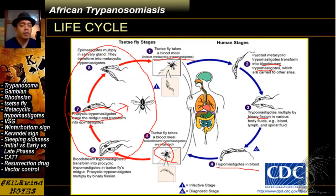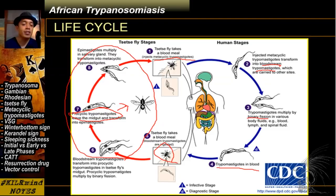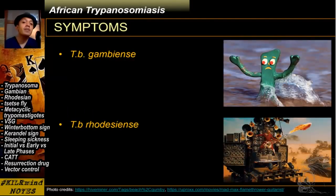While there is well-documented asexual reproduction amongst protists including your trypanosomes, there has been evidence of genetic exchange going on. According to studies, this usually happens inside a vector and is not recorded inside a human host.